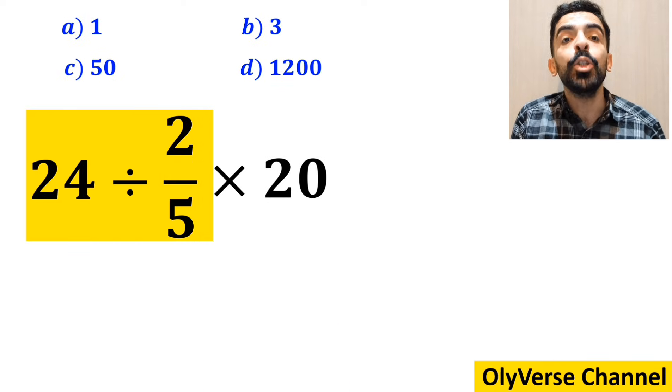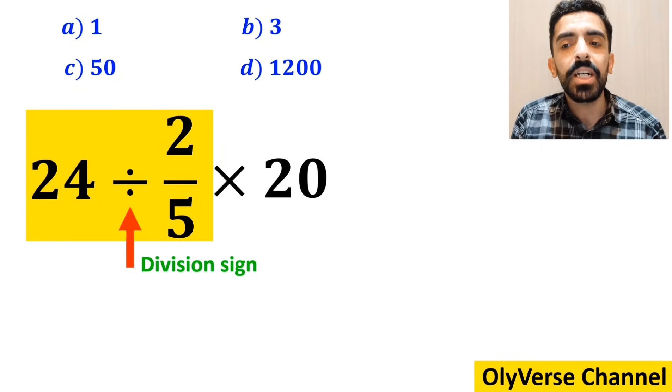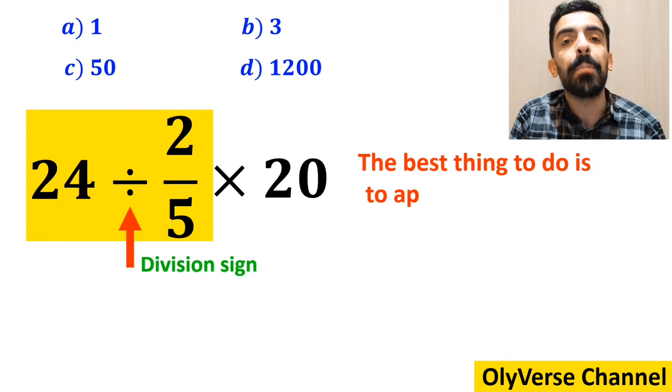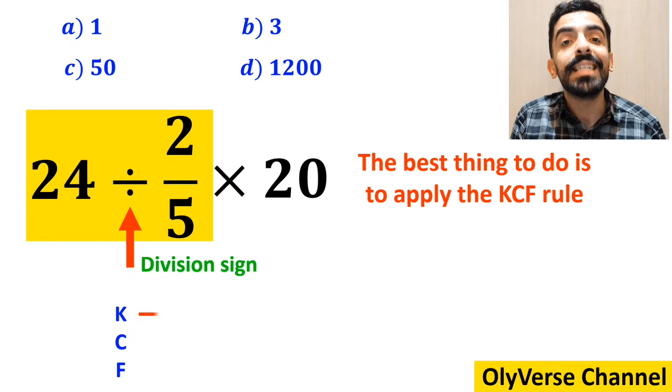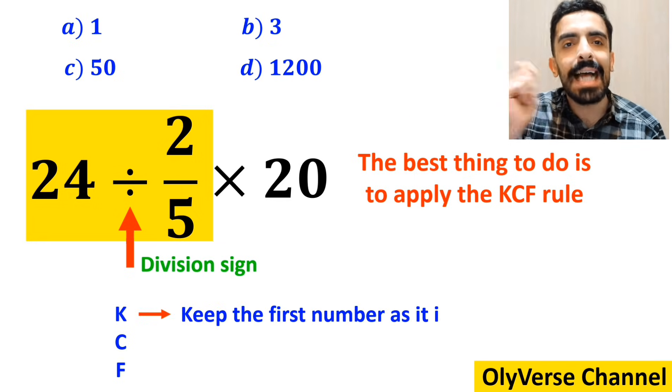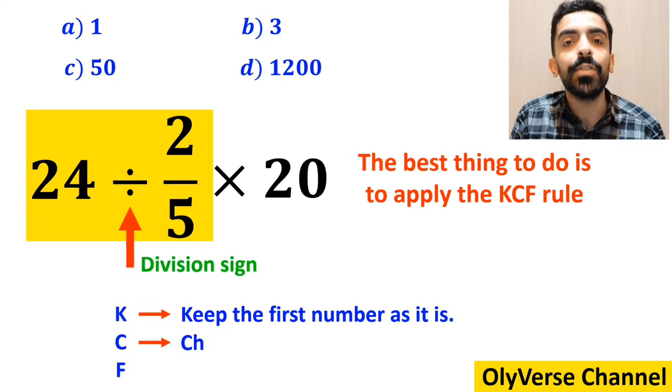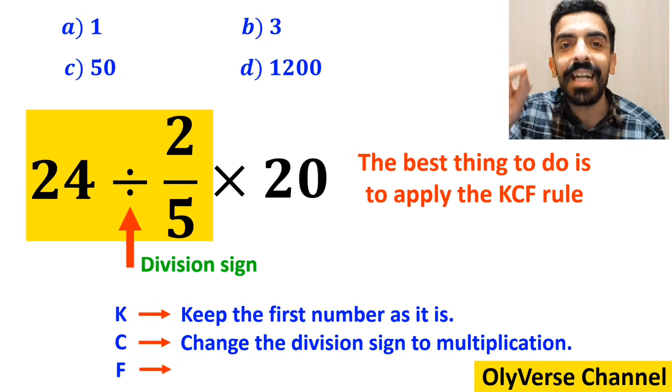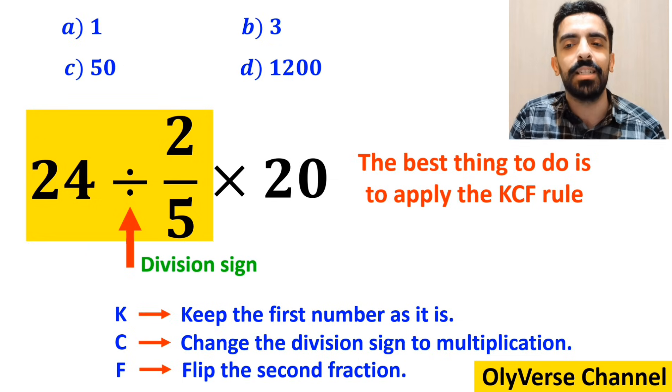So we'll start with the expression 24 ÷ 2/5. Okay, whenever we come across a division sign between two terms, the best thing to do is to apply the KCF rule. In this rule, K stands for keep the first number as it is, C stands for change the division sign to multiplication, and F stands for flip the second fraction.